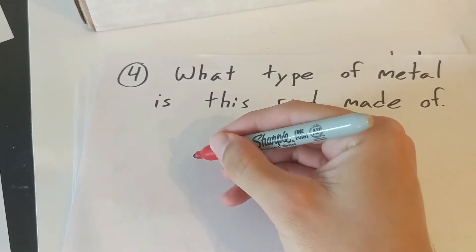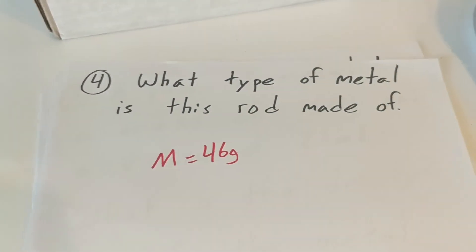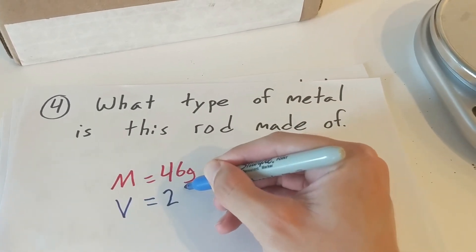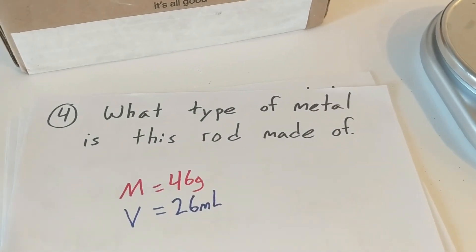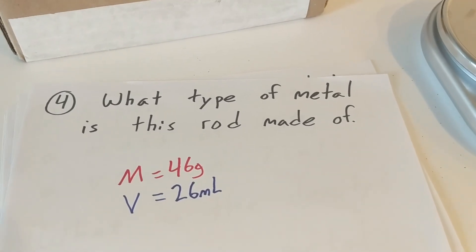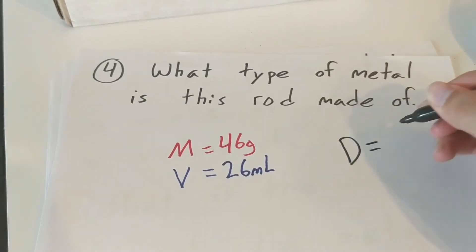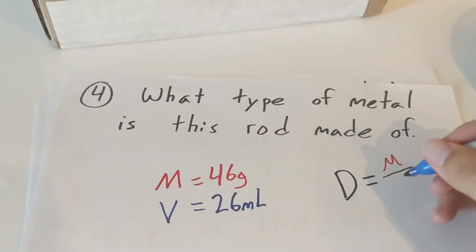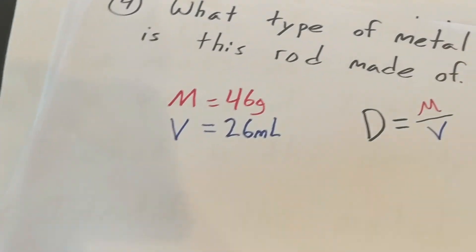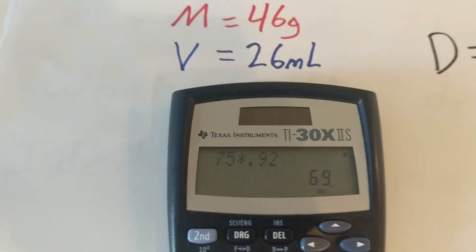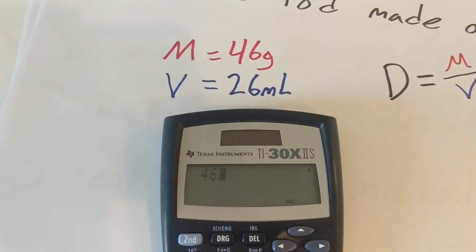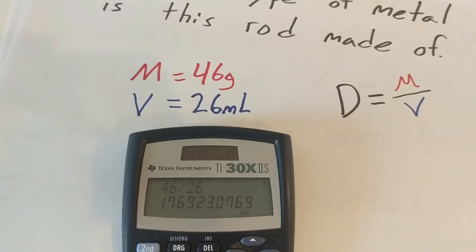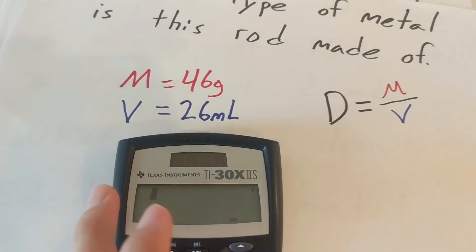We have a mass of 46 grams and a volume of 26 milliliters. Density equals mass divided by volume, so we plug that straight into a calculator: 46 grams divided by 26 milliliters gives a density of about 1.77, or approximately 1.8 grams per milliliter.